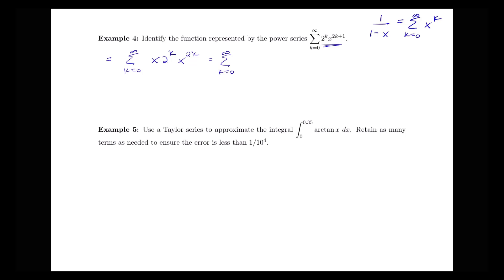We notice that x to the 2k can be written as x squared to the k. So we have 2 to the k and x squared to the k, which can be rewritten as 2x squared to the k. So we have x times the sum from k equals 0 to infinity of 2x squared to the k. This gives us back exactly what we had before: 2 to the k times x to the 2k plus 1. We can pull that x out in front of the sum.